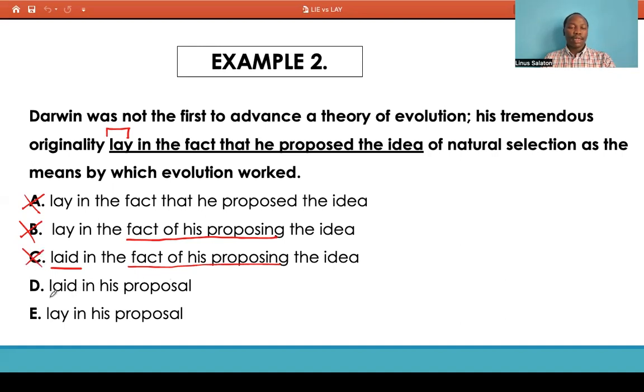So E: lay in his proposal. Yes, this is the better option of the five. Few words are used here but we still have correct meaning. You still know what is being communicated. So for that reason, E is a perfect answer. Darwin was not the first to advance theory of evolution. His tremendous originality lay in its proposal of natural selection as the means by which evolution worked.